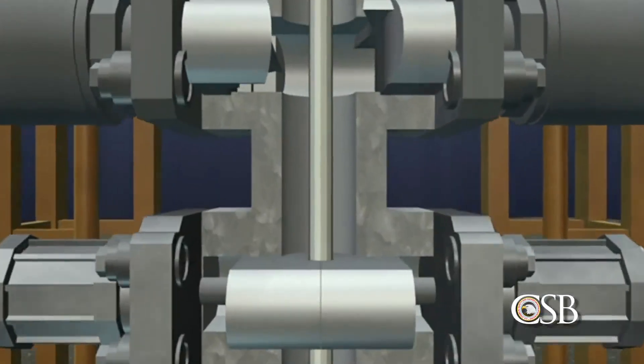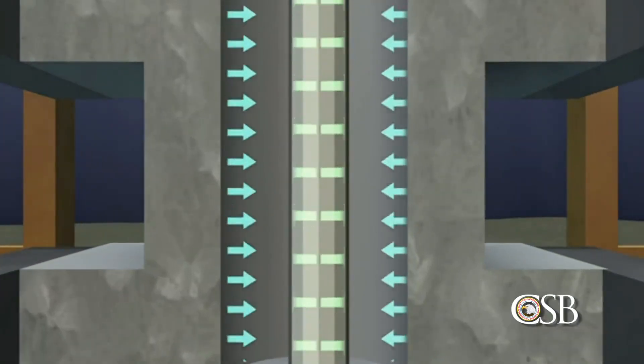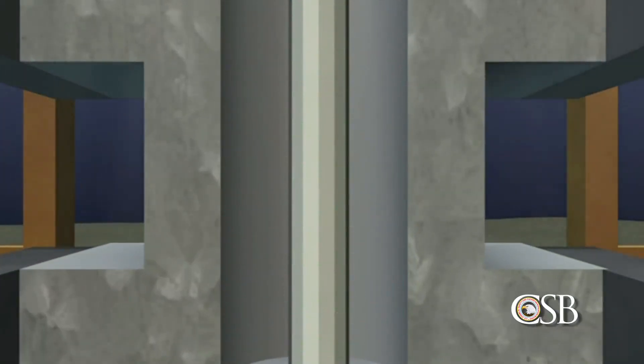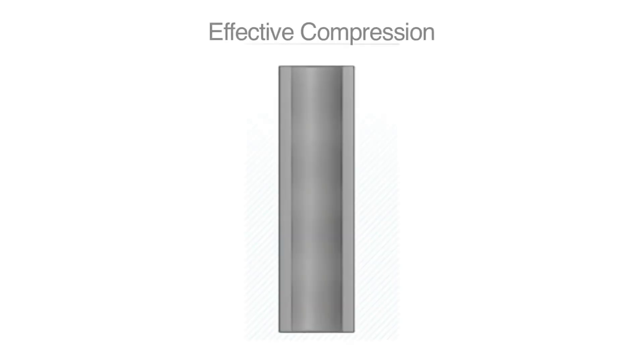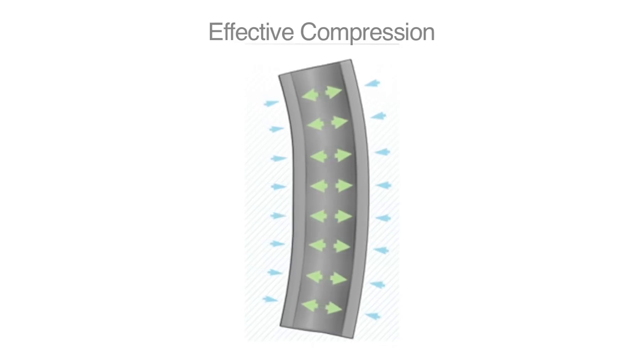During its investigation, the CSB identified a mechanism that likely caused the drill pipe to be buckled around the time of the explosion. This mechanism is called effective compression. Although effective compression had previously been noted as a hazard in other drilling operations, it had never been identified as a problem affecting drill pipe during well operations.